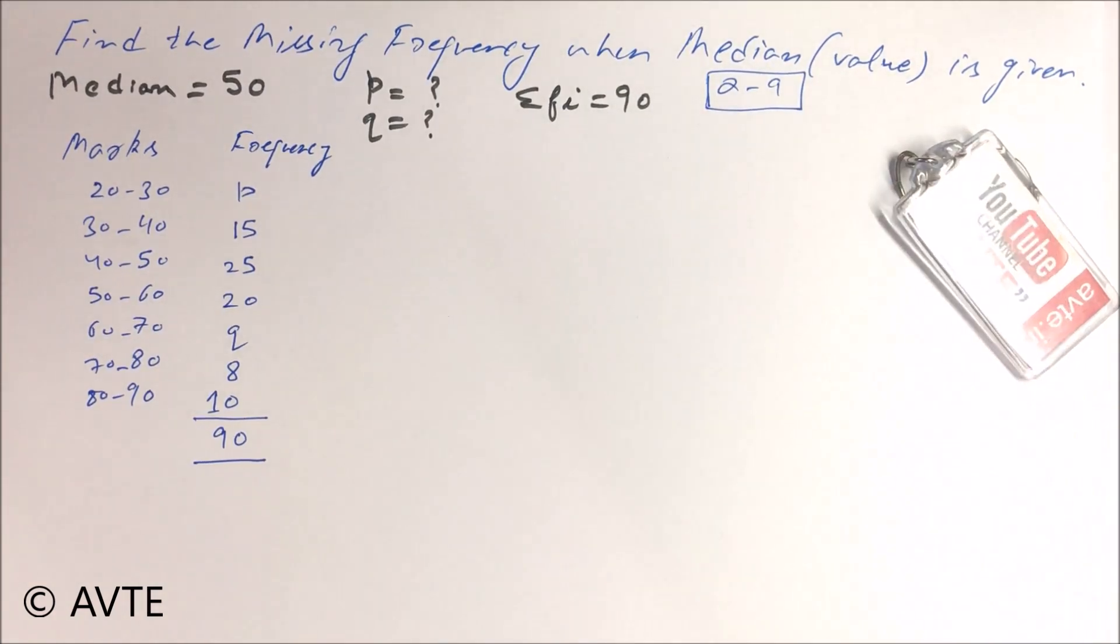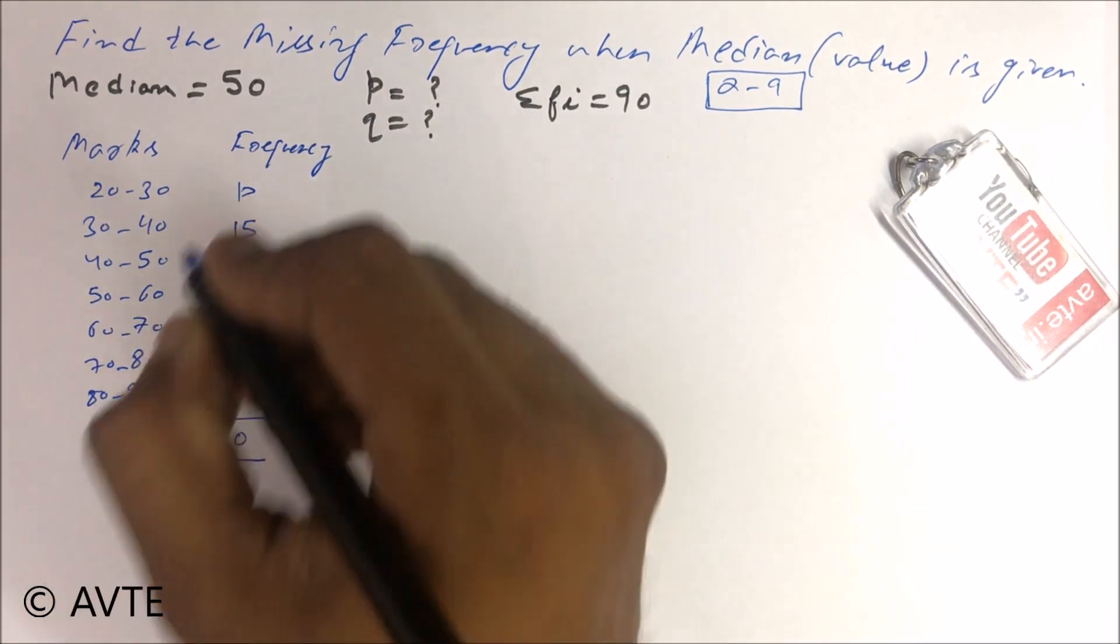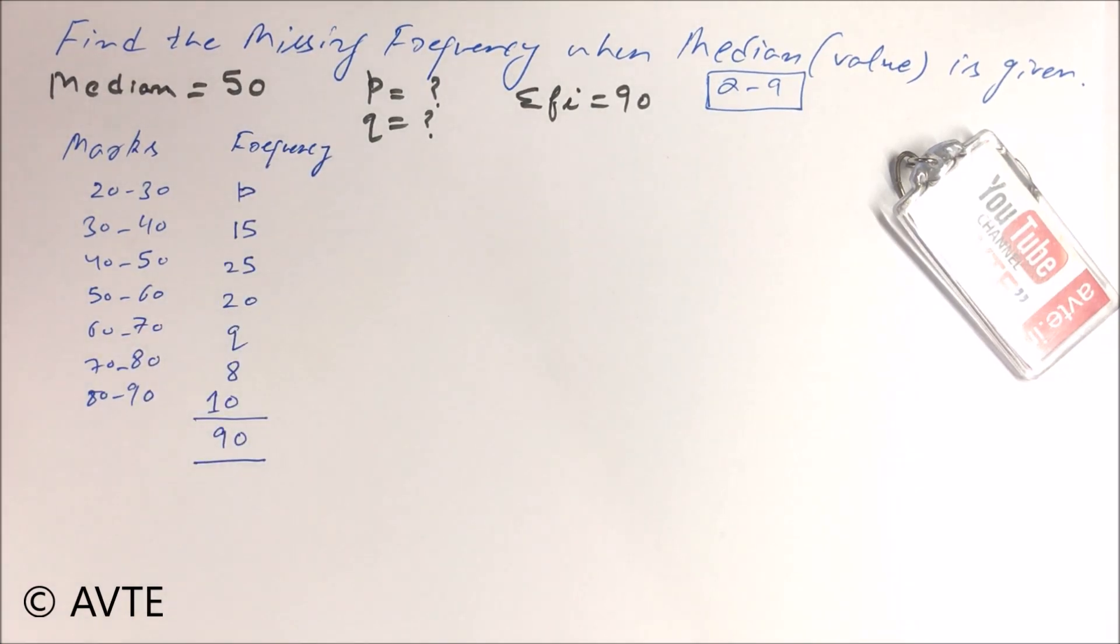In this question the value of median is 50 and we don't have two frequencies, we marked as P and Q. We have to find the value of P and Q if the sum of the frequencies is 90.